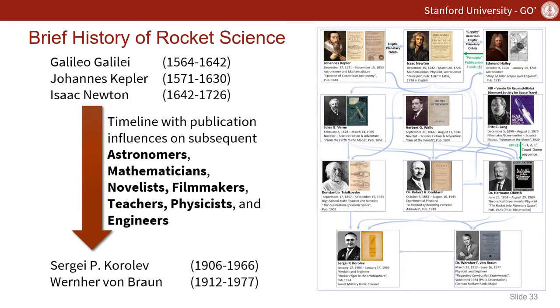Moving on with our brief history of rocket science, we make it to rows 2 and 3, where we start off with novelists, a filmmaker, a teacher, and physicists. But in a key pivotal role, we see Jules Verne.